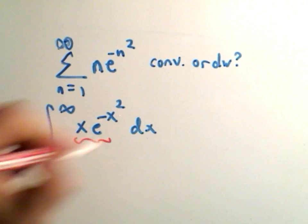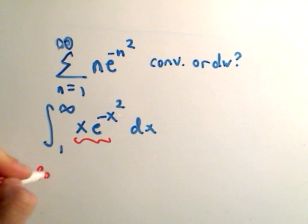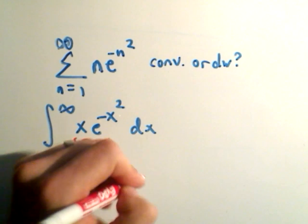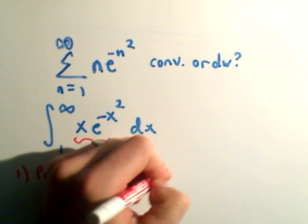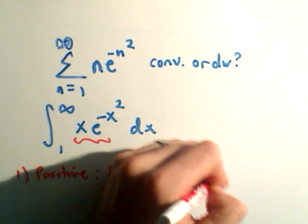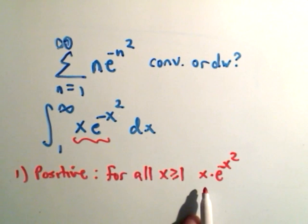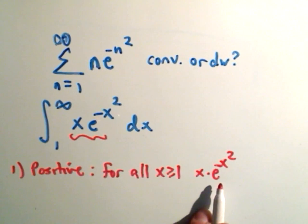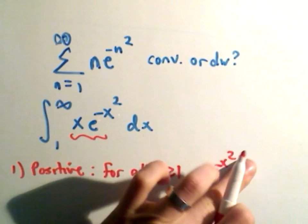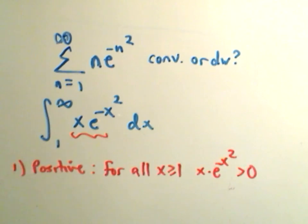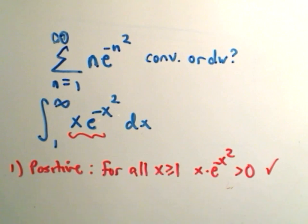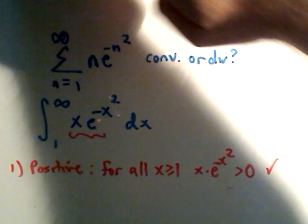So we have to show that this is one positive. But that's pretty obvious. For all x greater than or equal to 1, x times e to the negative x squared, well, x is positive, e to anything is positive. That's certainly going to be something that's greater than 0. So it's certainly positive. That condition is, I don't think you really have to do much of anything to show that.